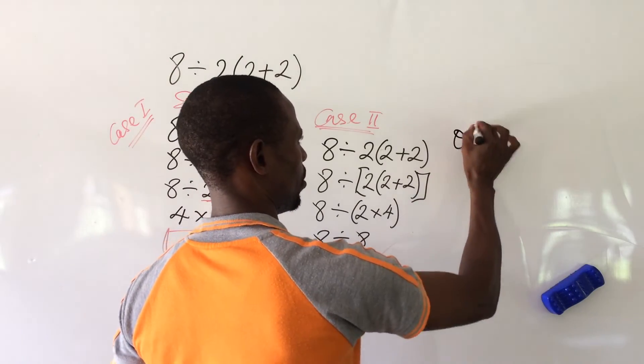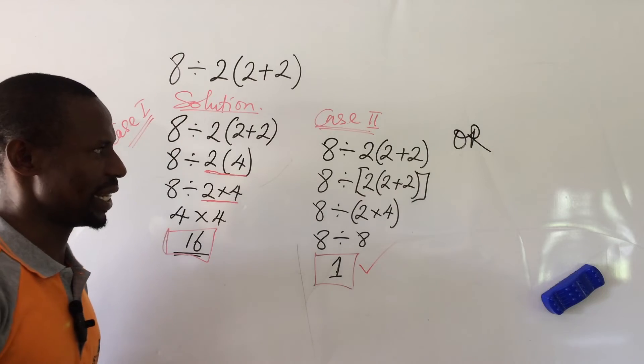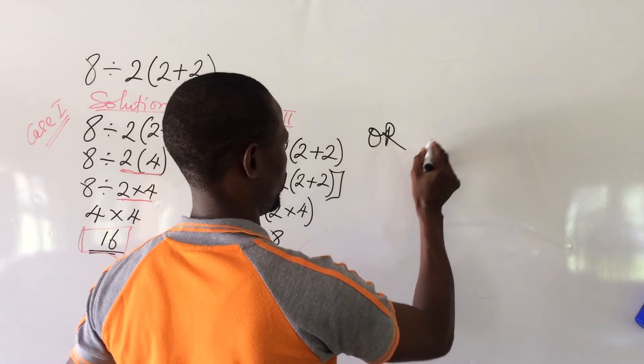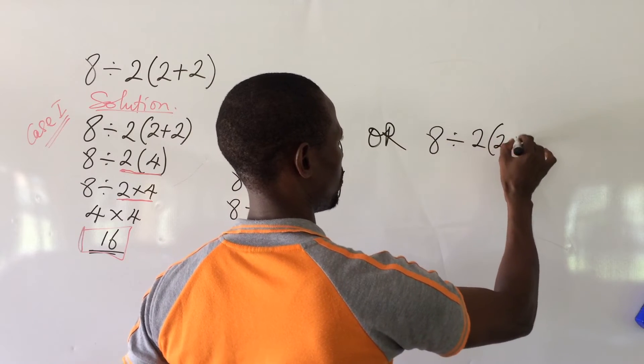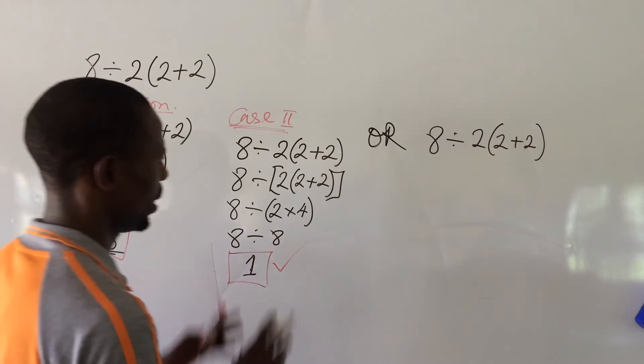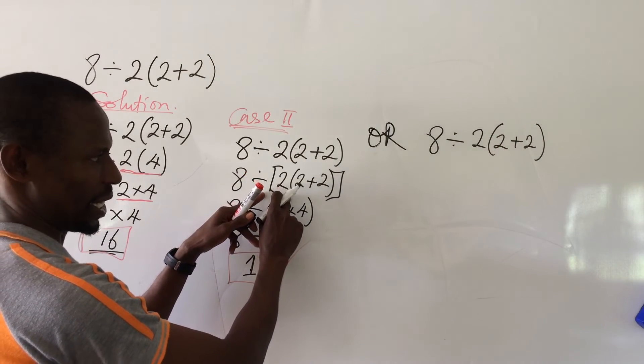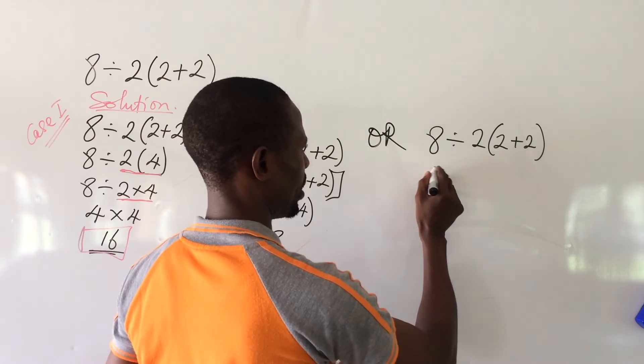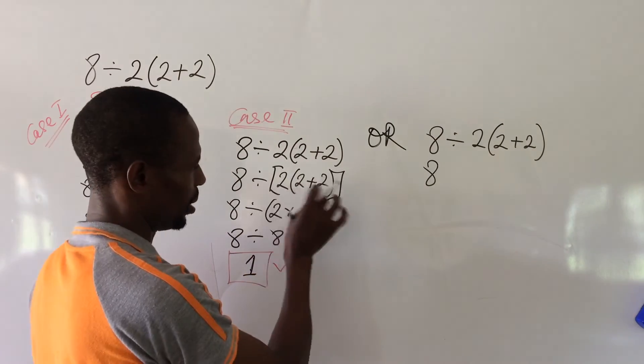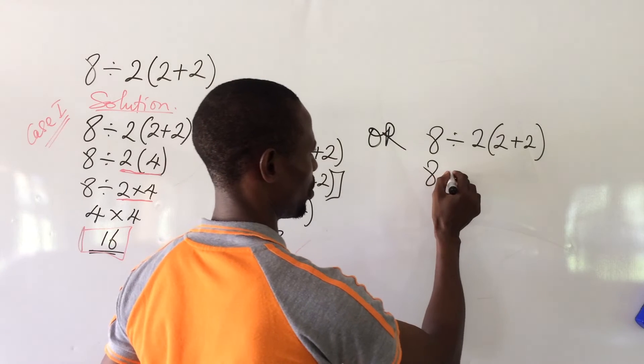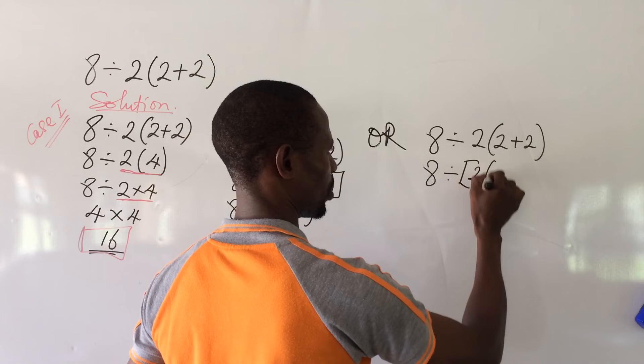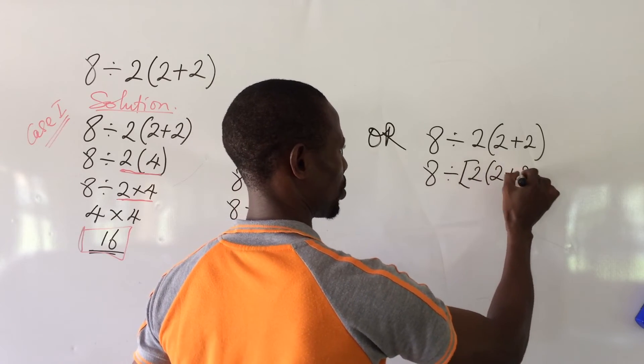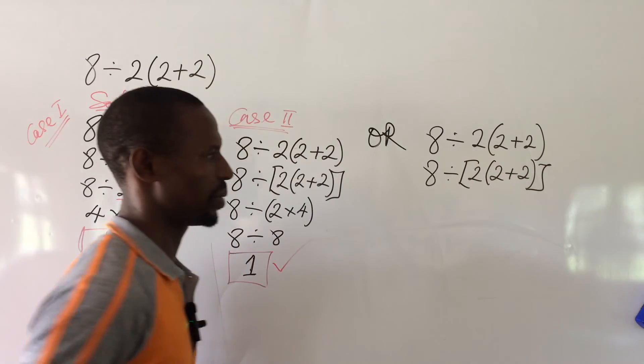We can equally do this. Let me use another pattern again. Let's pull the question we have here. 8 divided by 2 into 2 plus 2 close bracket. Now, look at what I introduced here now. So if I introduced this same expression or this same bracket, the square bracket, we're going to have this to be the square bracket, 2 close bracket, 2 plus 2 close bracket into our square bracket.